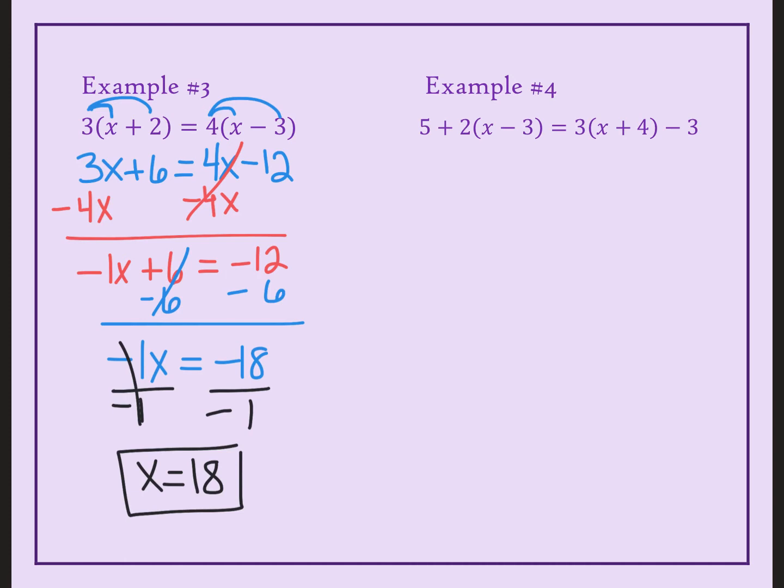Now example number 4 is actually our last question. So again, we look in front of these parentheses. And I'm going to distribute the 2 here and here. Don't touch the 5. We're going to just bring that 5 down. It doesn't do anything. And then 2 times x, 2 times negative 3. 3 times x, 3 times 4. And bring down a minus 3.